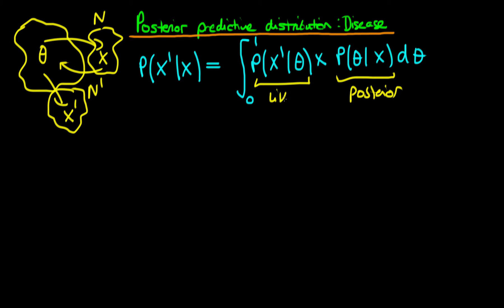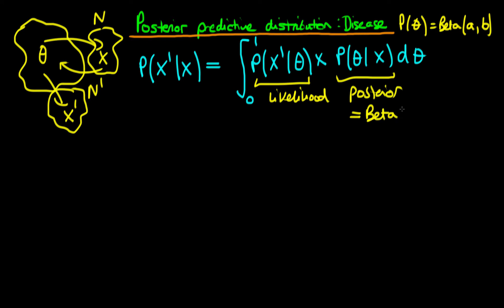This is simply a likelihood function. We start with a beta prior, with parameters a and b, to represent our prior knowledge before taking either sample from the population. When we have a beta prior and a binomial likelihood, the posterior is also beta — because the beta is conjugate to the binomial distribution. It's a beta distribution with new parameters x plus a, and n plus b minus x.